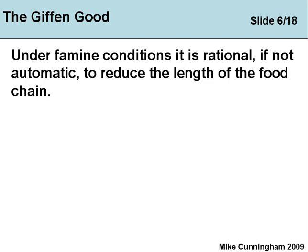Under famine conditions it's rational — almost automatic — to reduce the length of the food chain. It's very inefficient to have cattle, sheep, or goats walking around because they burn up energy. So if you're facing famine conditions, the chances are you will go back to root crops because you take the energy directly from the earth, cutting out the middle producer, so you don't have meat or that type of food.